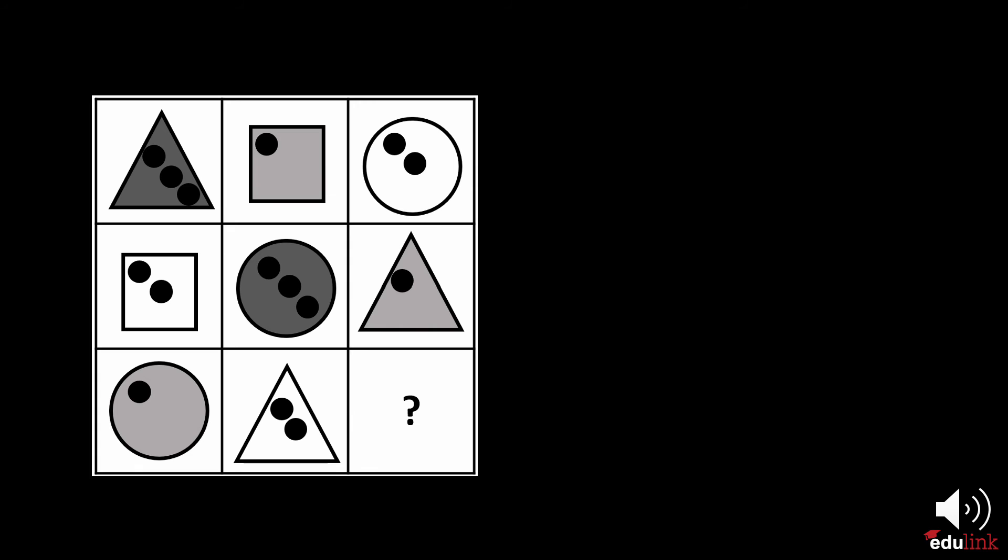In this case, shape, color and shade, and amount were combined. As for the shape, everything is different within each row and column. As for the color and shading, it's all different within each row and column.